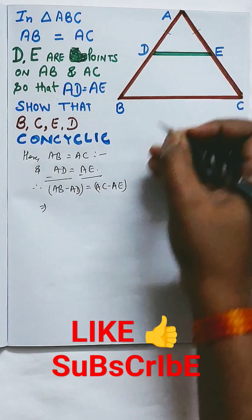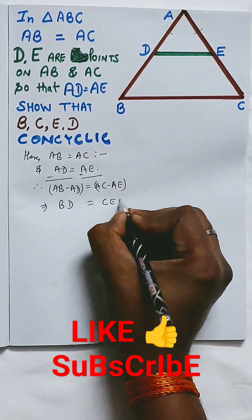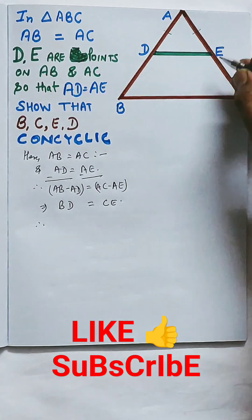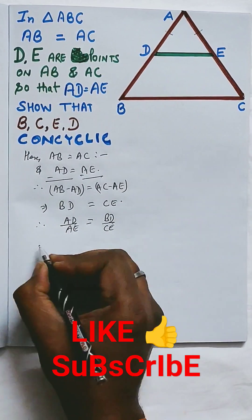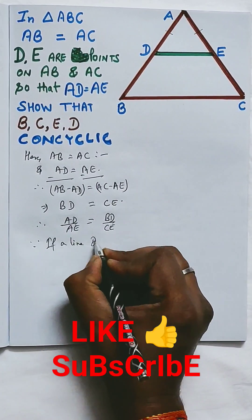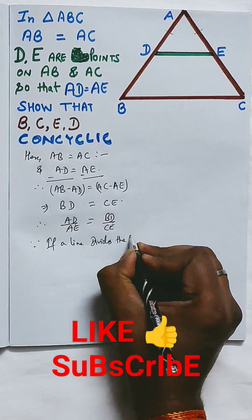So if you subtract AD from AB and AE from AC, we get BD equal to CE. So we can say AD by AE equal to BD by CE, that means this ratio is same.